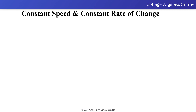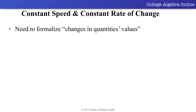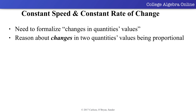Therefore, to really talk about constant speed and other similar ideas, we must formalize the idea of changes in a quantity's value, and gain experience reasoning about changes in two quantities' values being proportional, rather than the quantities' values themselves. This is what we will be exploring in the rest of this module. In the next investigations, we will formalize changes in quantities' values, and see what happens when two quantities vary together such that the changes in the quantities' values are proportional.